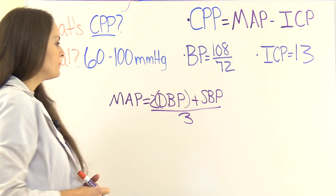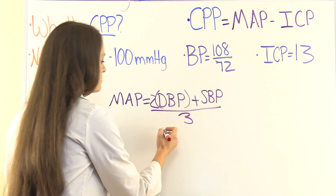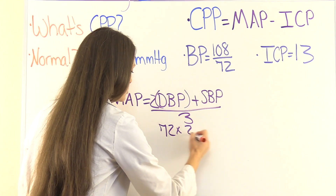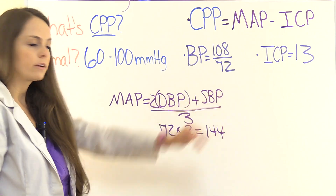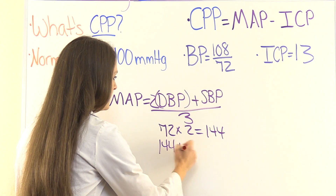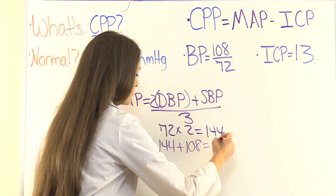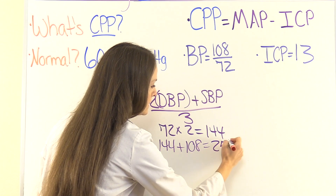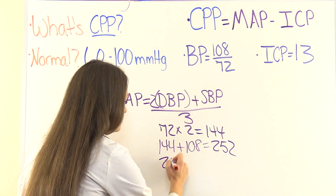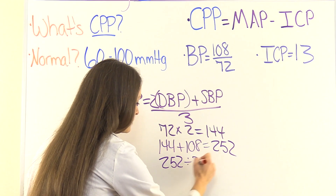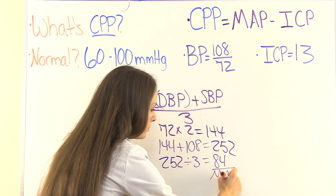Plug it in and work it out. Our diastolic — the bottom number — is 72. So 72 times two equals 144. Then we take 144 and add it to the systolic blood pressure, which is the top number, and it's 108. So 144 plus 108 is 252. Then we take 252 and divide it by three: 252 divided by three equals 84. So our MAP, our mean arterial pressure, is 84.